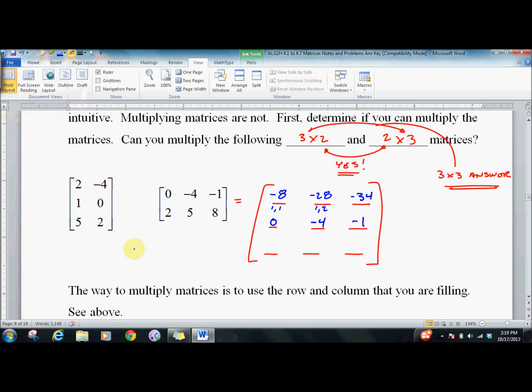Five times zero plus two times two is four. Five times negative four plus two times five is negative twenty plus ten, which is negative ten. Five times negative one is negative five plus sixteen is eleven. So there's our three by three matrix.